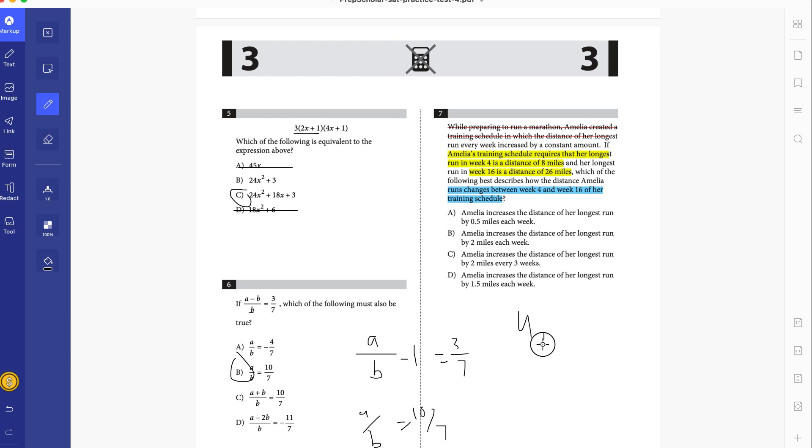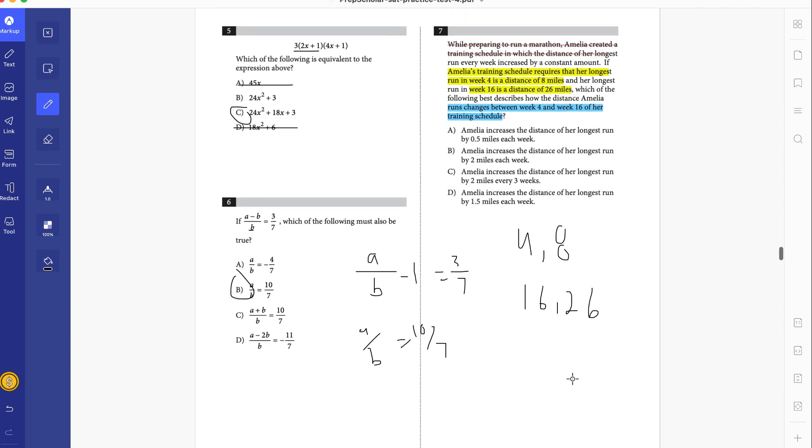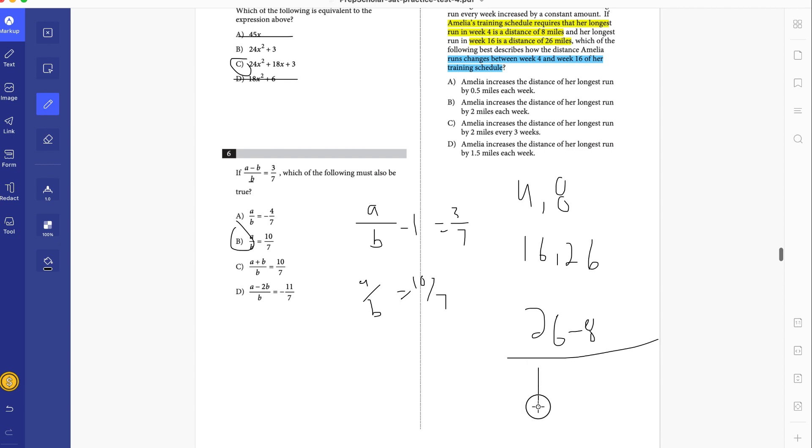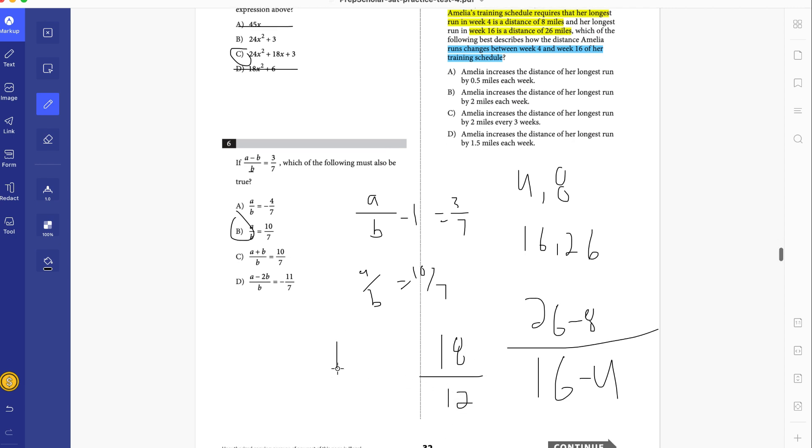So week 4 is distance of 8 miles, week 16 is distance of 26 miles. So what's the change? How many miles are you increasing every week? Well, let's do 26 minus 8 over 16. You're trying to find a slope. 26 minus 8 is 18. 16 minus 4 is 12. So this is 18 divided by 12, which is 1.5.